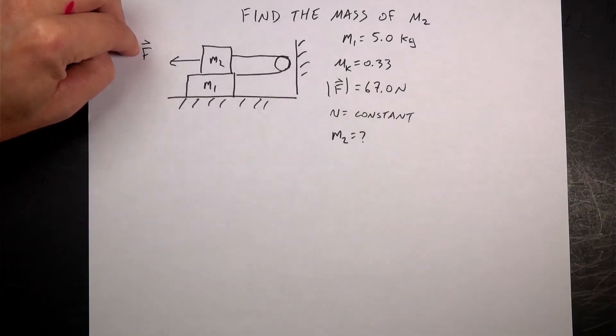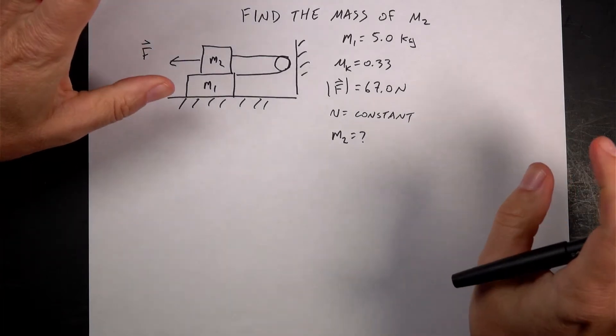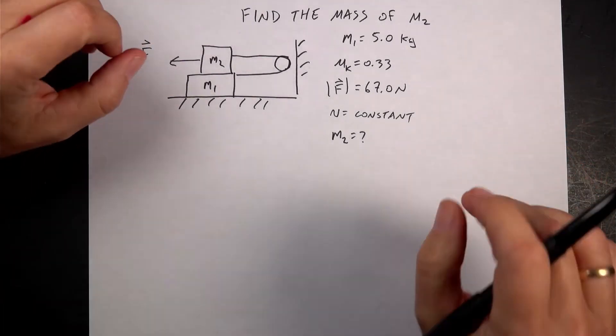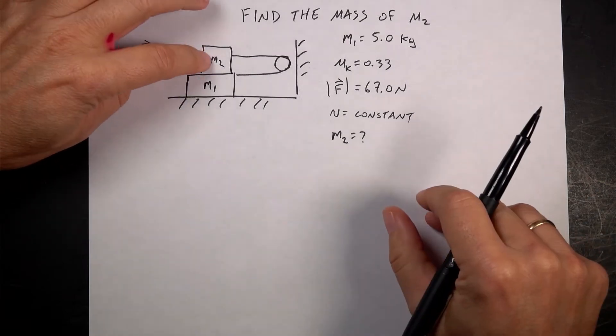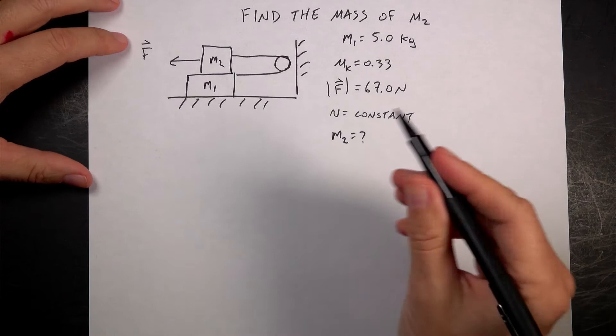So this is really just a force problem, right? A free body diagram problem. So let's just get right to it. Let's just draw a force diagram for mass two and mass one. And I haven't done this problem before so I don't really know what's going to happen.